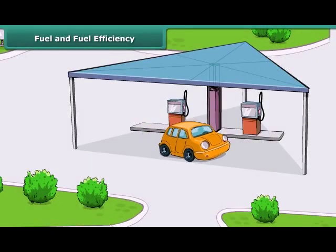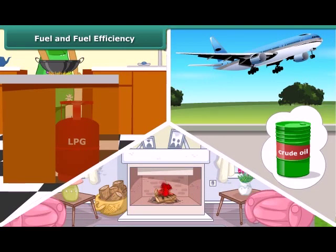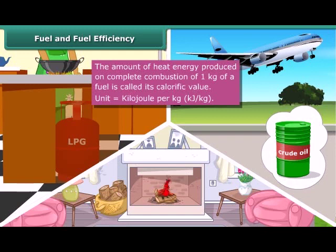Fuels are an important source of energy. We use petrol or diesel for driving a car, LPG for cooking food, crude oil for flying an airplane, and wood to provide warmth. All fuels do not burn efficiently. Fuel efficiency is determined by its calorific value — the amount of heat energy produced on complete combustion of one kg of a fuel, expressed in kilojoules per kg. Calorific value of LPG is more than wood or coal, which is why LPG is a more efficient fuel.